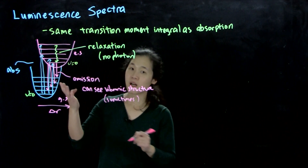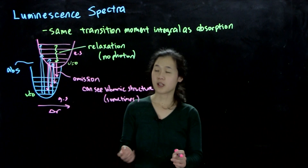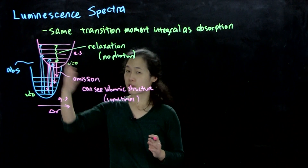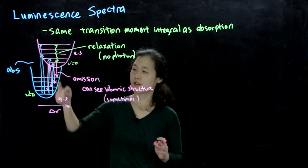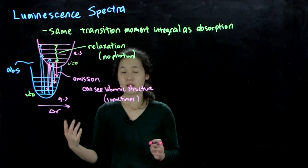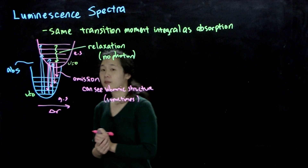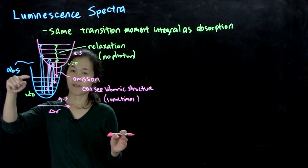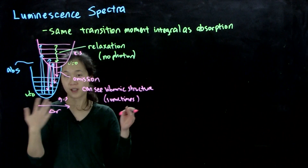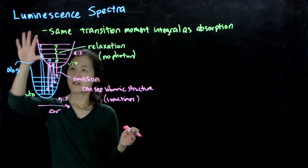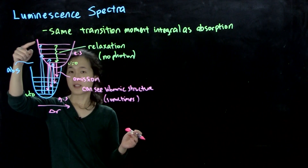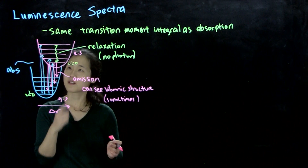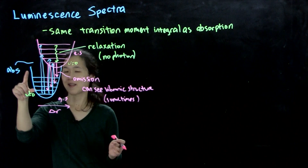Vibronic coupling, just like with absorption, can also lead to broadening of your luminescence band. If you don't resolve the actual fine structure, you'll still see different energy levels that it can emit to. Another complication: broadening could occur if we're exciting from higher vibrational levels of the ground state at high temperature. However, since everything relaxes down to nu equals zero before emitting, there actually shouldn't be broadening due to temperature.